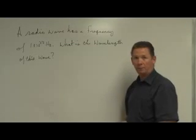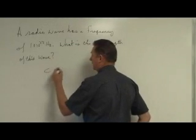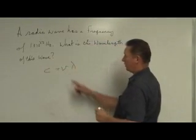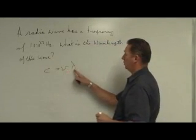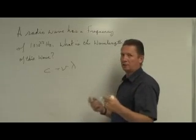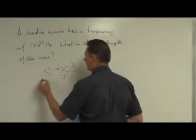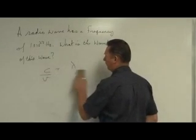If we go ahead and set up the problem, it's done the same way. The speed is equal to the frequency times the wavelength. Only this time we have the frequency. We're looking for the wavelength. Well, let's do our isolation first. Let's divide both sides by the frequency so that we can now isolate the wavelength.